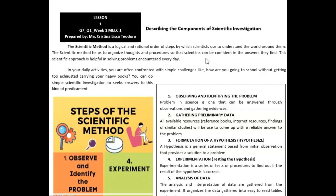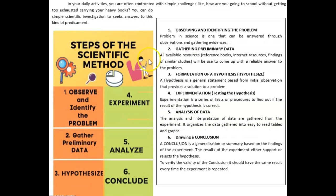You can also see here the six steps of the scientific method: observing and identifying the problem, gathering preliminary data, formulation of a hypothesis, experimentation, analysis of data, and drawing a conclusion.